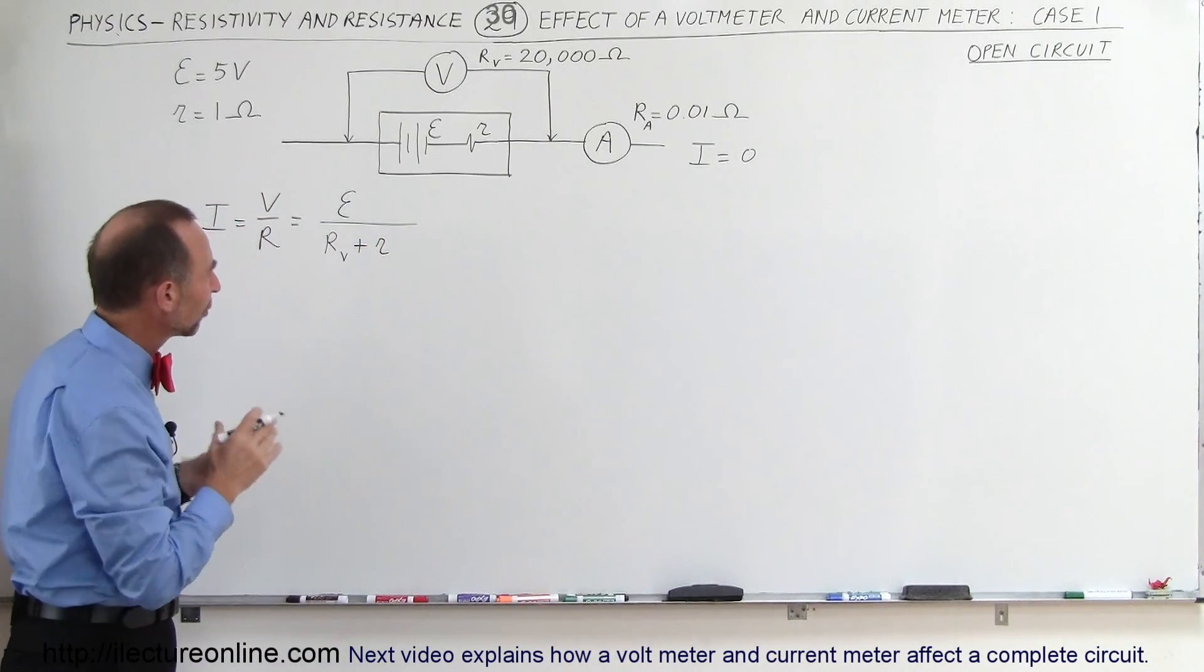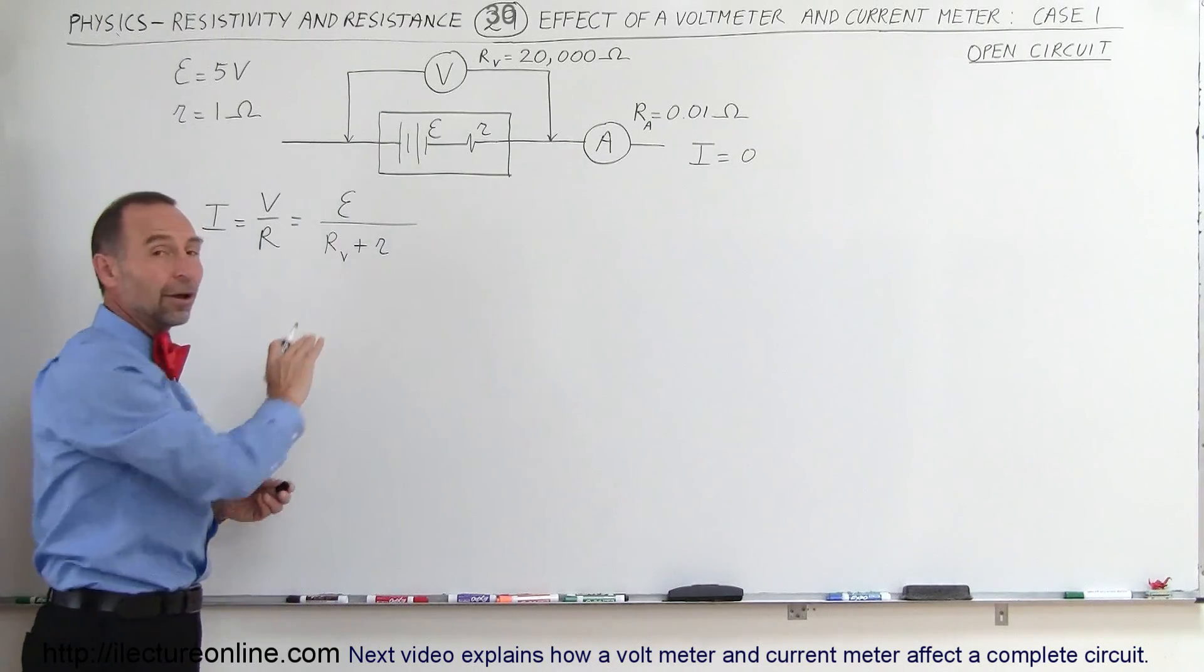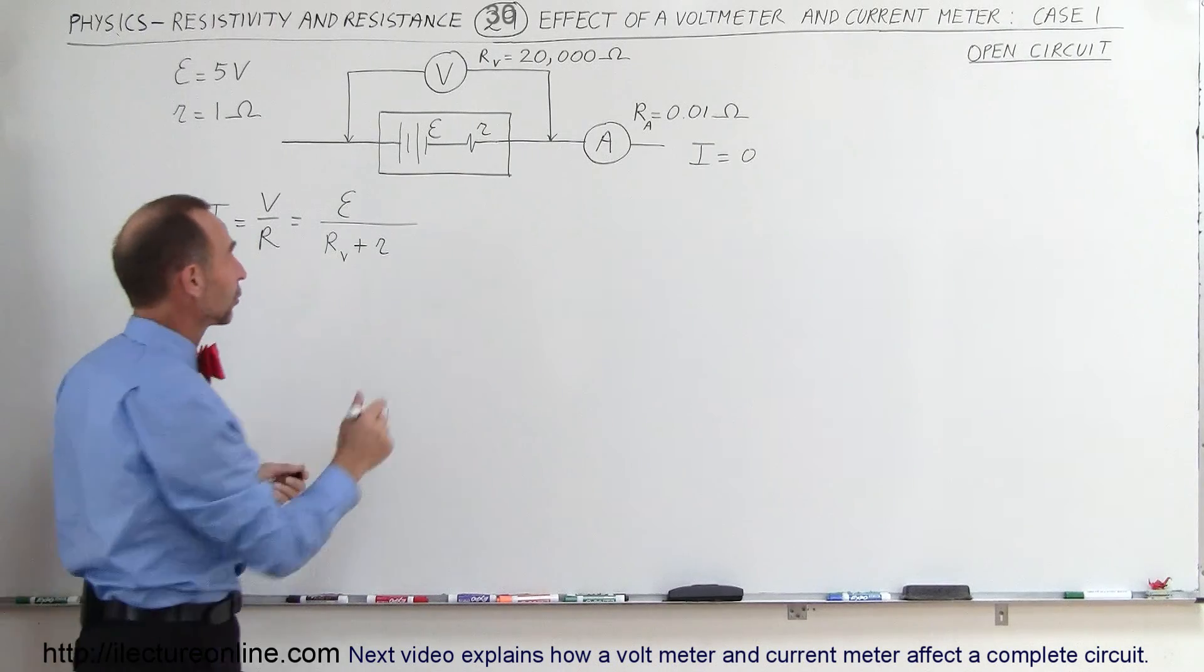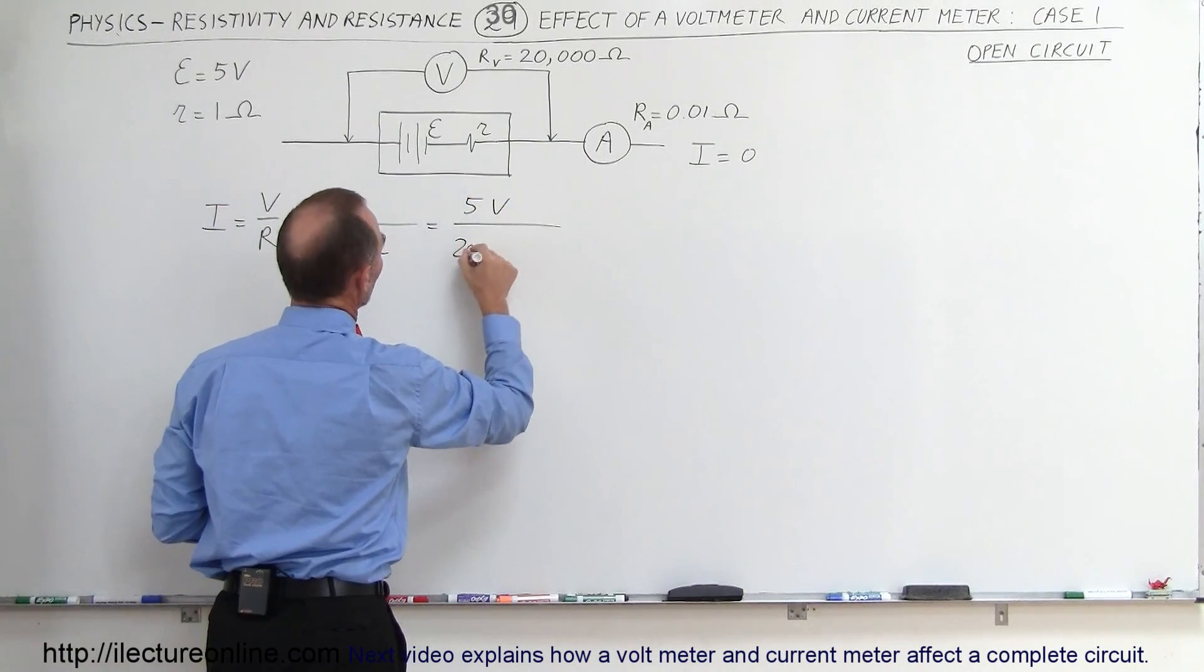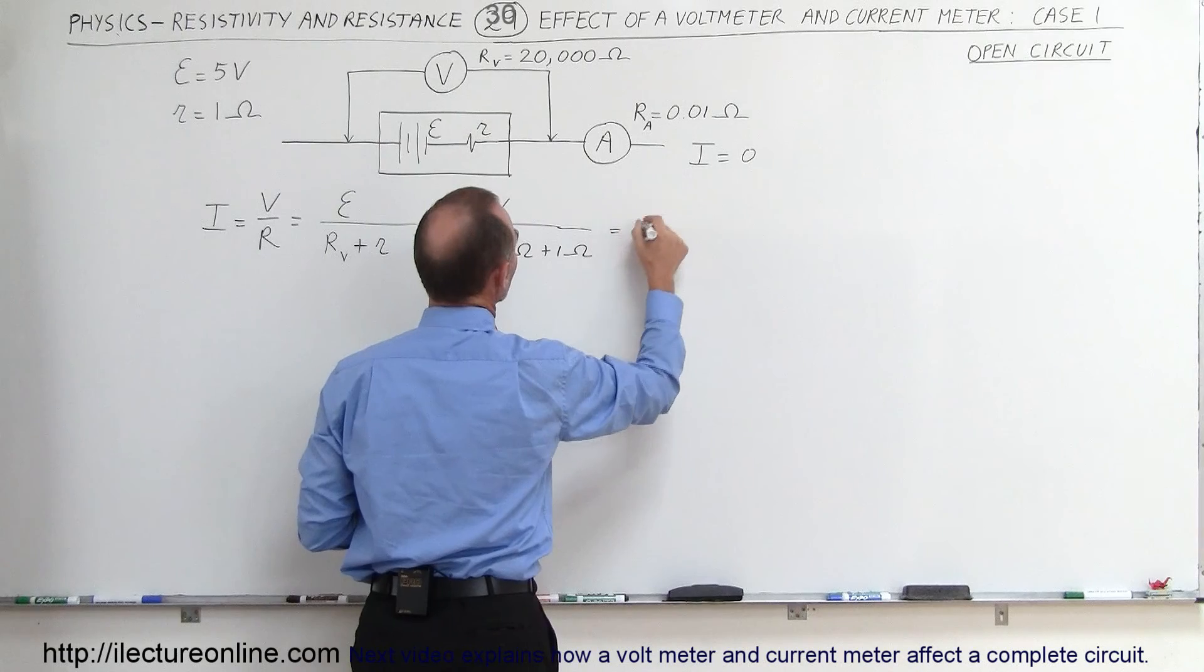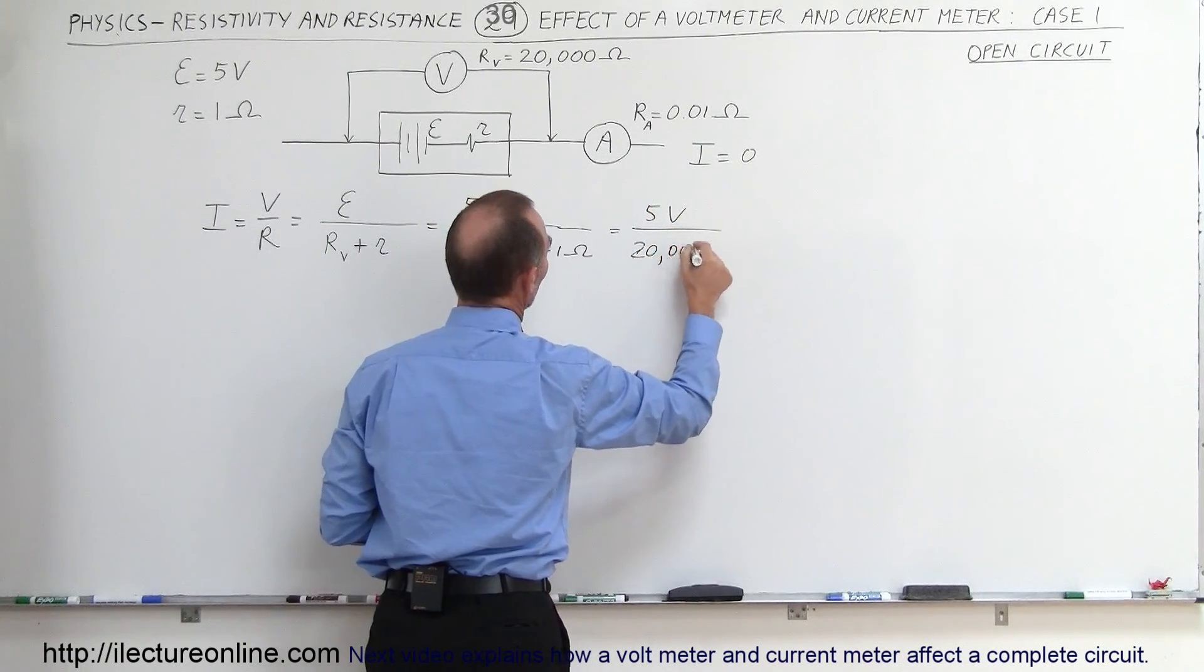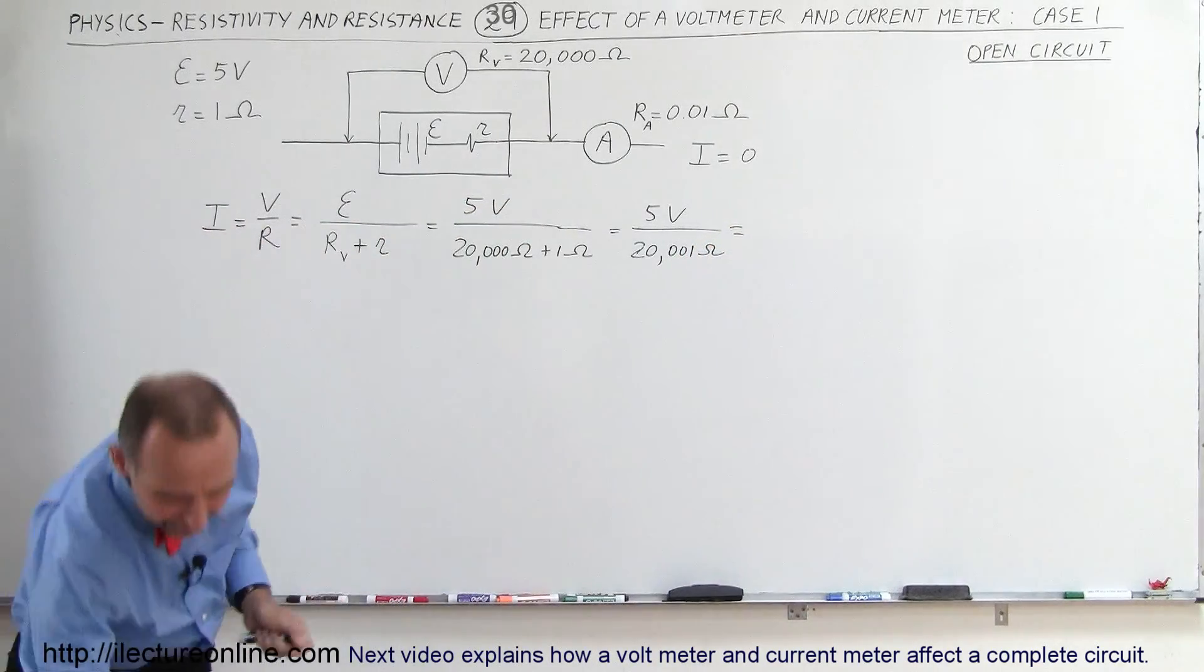You'll see that the internal resistance of the circuit is very small. This is very large, the resistance of the voltmeter. So we should see a very, very small current. Let's see how that works out. 5 volts divided by 20,000 ohms plus 1 ohm. You can see that the internal resistance in this case is insignificant. 5 volts divided by 20,001 ohm.